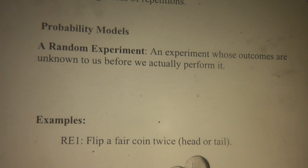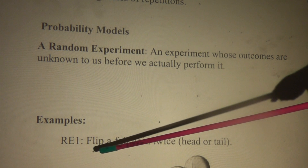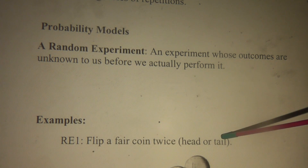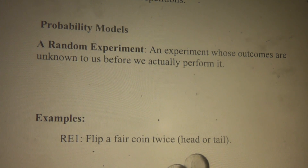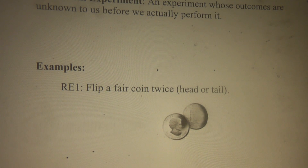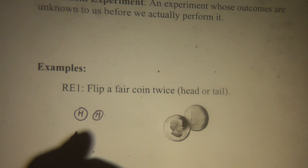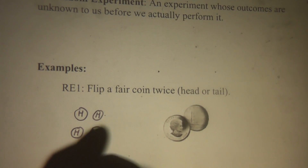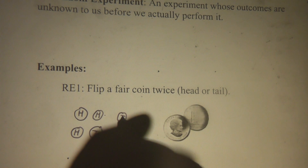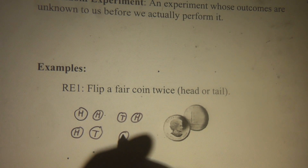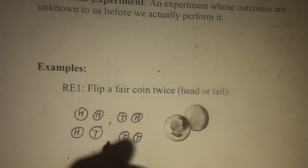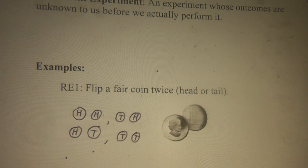For example, random experiment one: flip a fair coin twice. When we flip a fair coin twice, how many possible outcomes can we see? We can see head-head, head-tail, and other combinations — there are four possible outcomes resulting from this random experiment. Before we actually perform the experiment, we have no idea which one we would get.